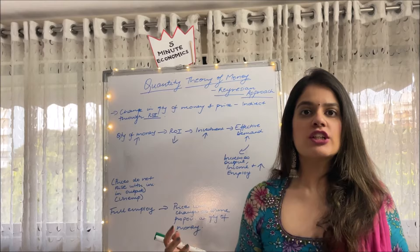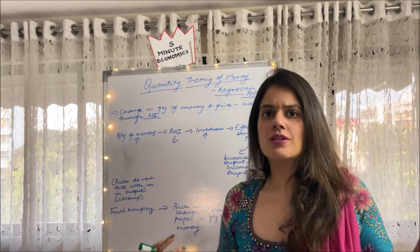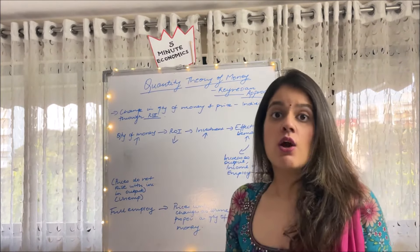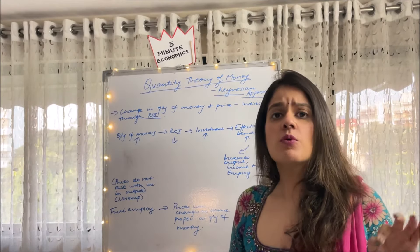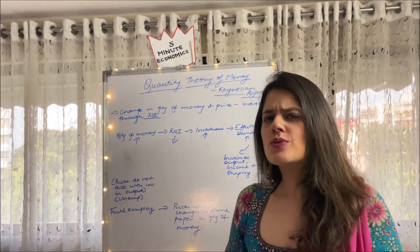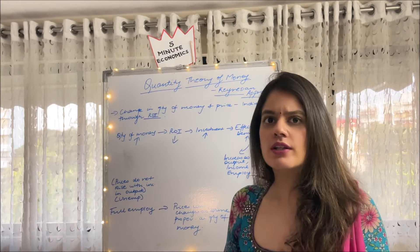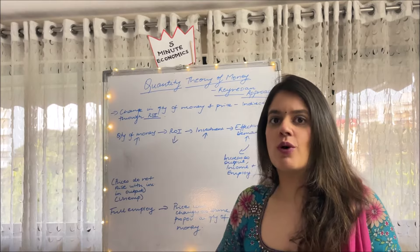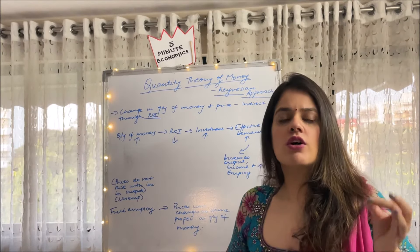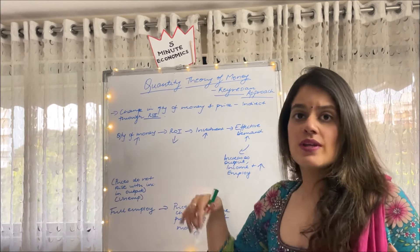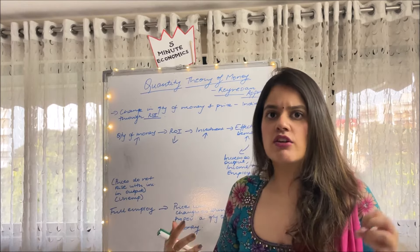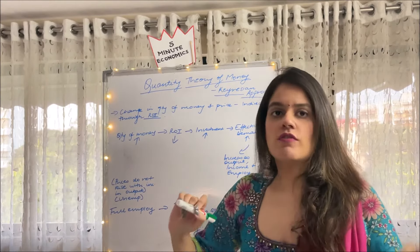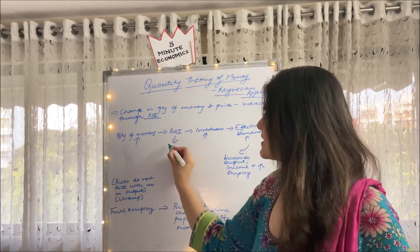Now moving to the main explanation of the theory. The change in the quantity of money and price is indirect — Keynes has told us this. He brought in the concept of rate of interest, written as ROI, which was until now completely ignored. No one spoke about ROI; we only spoke about quantity of money and prices. But he showed that there is an indirect relationship on prices when the quantity of money increases, and he brought in the concept of ROI.